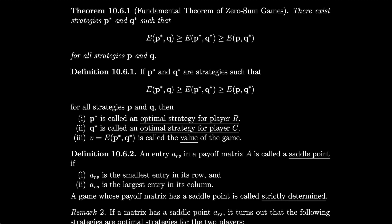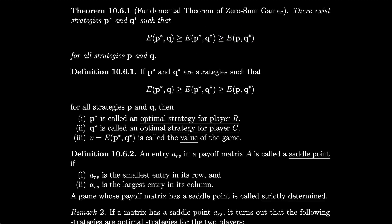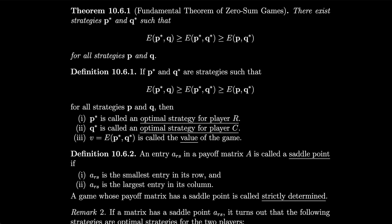Next up, we have the fundamental theorem of zero-sum games, which states that there exist strategies P* and Q* such that E(P*, Q) ≥ E(P*, Q*) ≥ E(P, Q*) for all strategies P and Q. An entry a_rs in a payoff matrix A is called a saddle point if a_rs is the smallest entry in its row and the largest entry in its column. A game whose payoff matrix has a saddle point is called strictly determined.